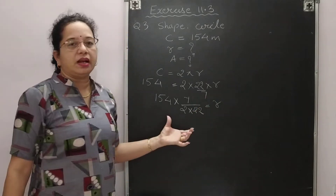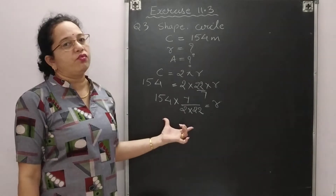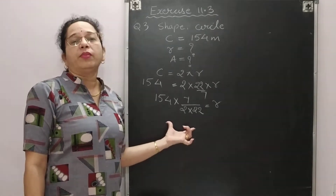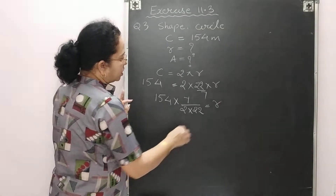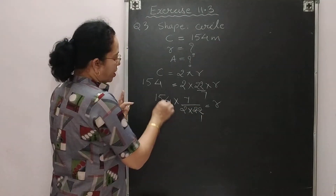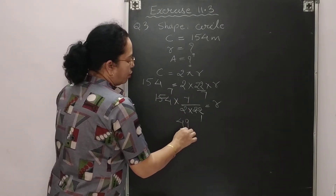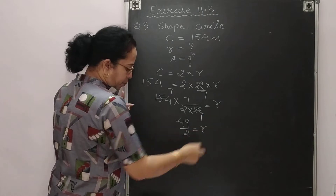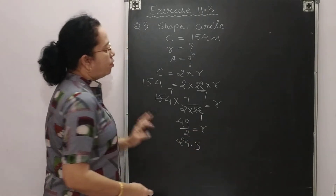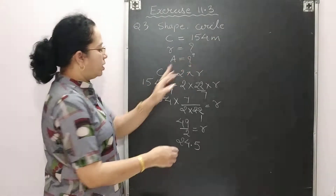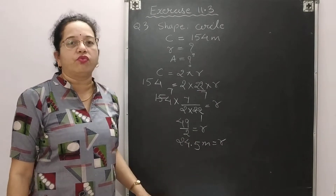Cut the numbers: 22 cancels with 22 (from 154), and 7 × 7 = 49. So r = 49/2 = 24.5 meter. If you have any doubt about cutting fractions, you can watch the fraction multiplication video. The radius is 24.5 meter.